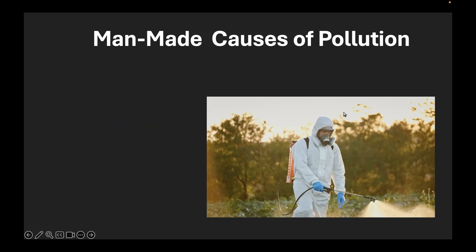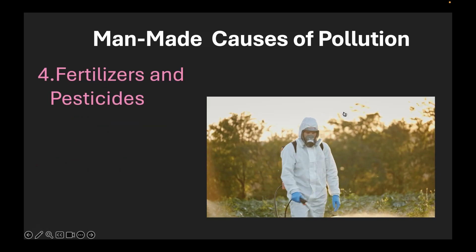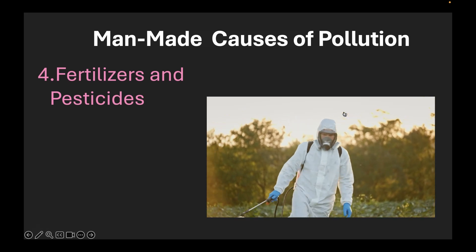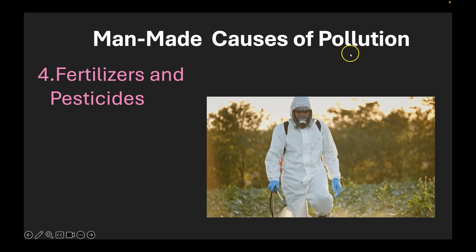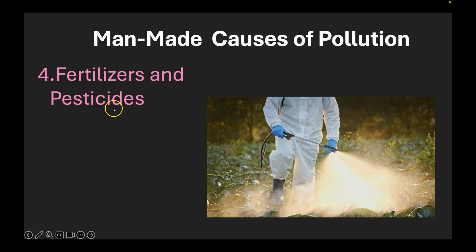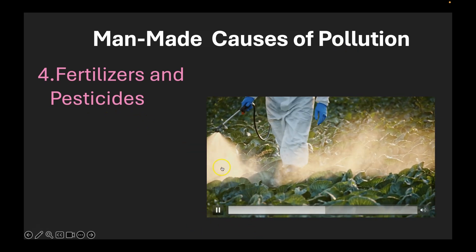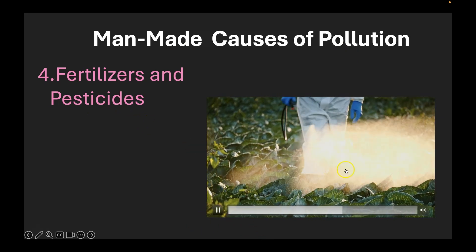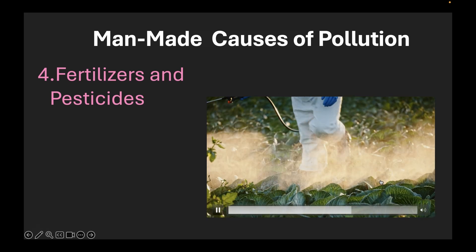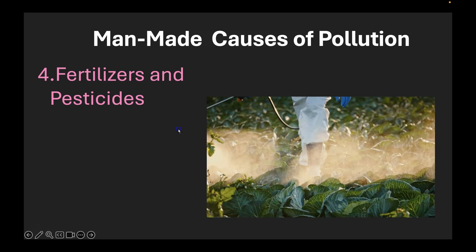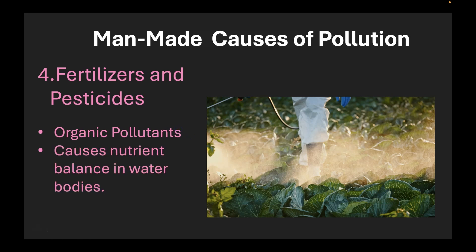Now let's move on to fertilizers and pesticides. While fertilizers and pesticides are useful on farmland, sometimes when these fertilizers and pesticides enter water bodies like the water table under the ground or when they run off into lakes, ponds, rivers, seas, it can cause a lot of issues. This is organic pollutants. It causes nutrient imbalances in water bodies.